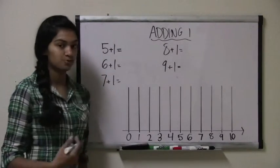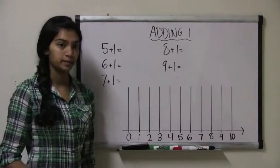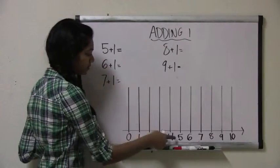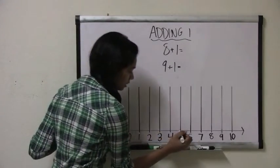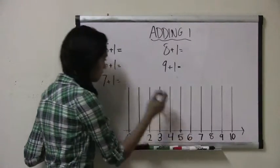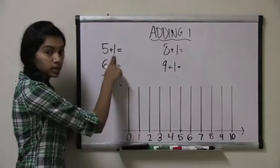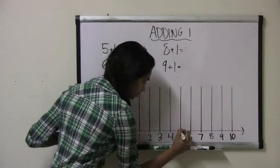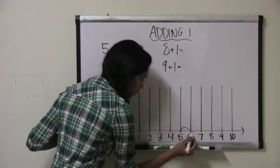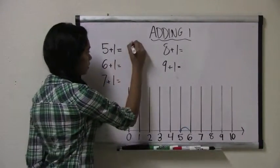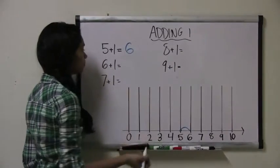I'm going to do this problem on the number line. So we start with the first number, 5, and we draw a dot on it. Then we're trying to add 1, so we jump one spot. 1. Now land on the number 6. So 5 plus 1 equals 6.